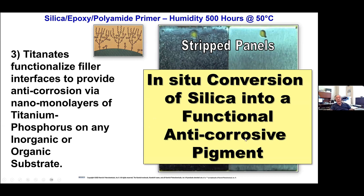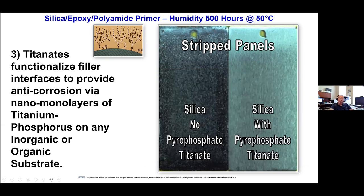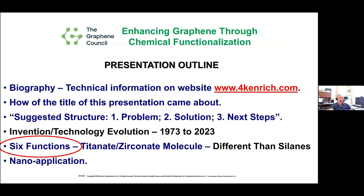We've done tests with epoxy, with silica, and with pyrophosphatyl titanate. This is the silica without the pyrophosphatyl titanate, and this is the silica with it — we were measuring against basic lead silica chromate. With the pyrophosphatyl titanate and the silica, we outperformed the basic lead silica chromate. So you can convert silica into a functional anti-corrosive pigment, and you can do the same thing with graphene.